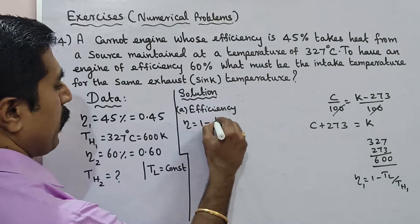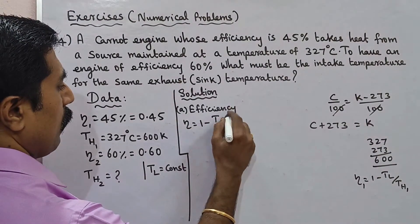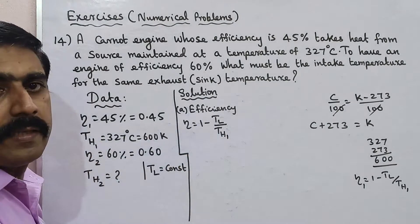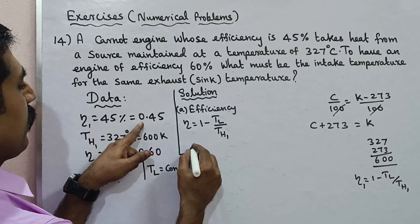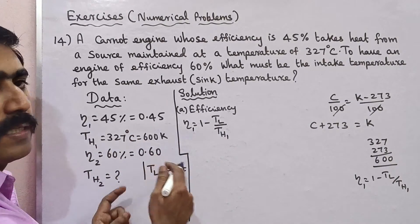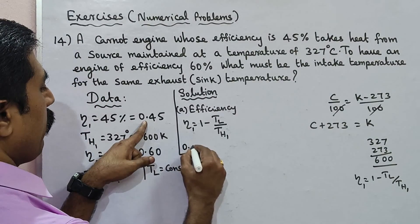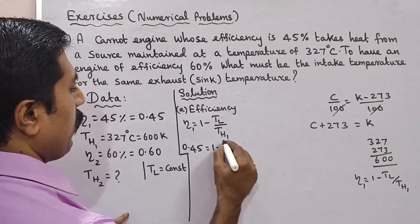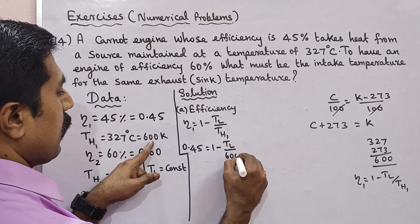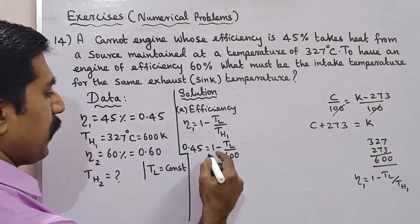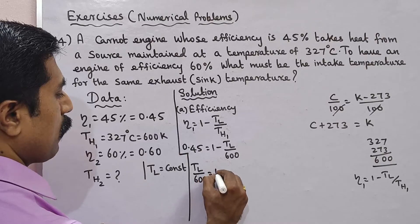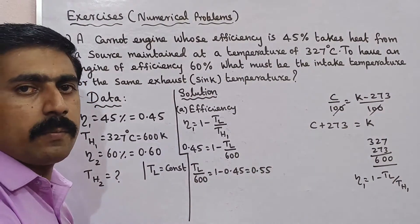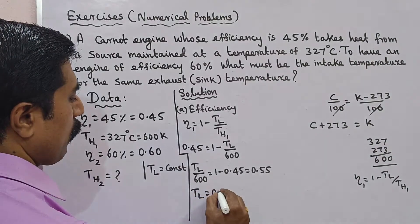For the first case: eta equals 1 minus TL by TH. Substituting eta₁ equals 0.45 and TH1 equals 600 Kelvin: 0.45 equals 1 minus TL divided by 600. Rearranging, TL divided by 600 equals 1 minus 0.45, which equals 0.55. Therefore TL equals 0.55 multiplied by 600.